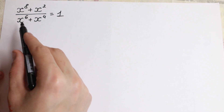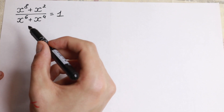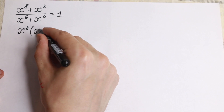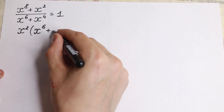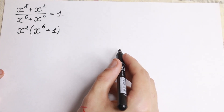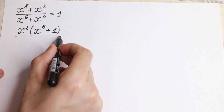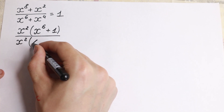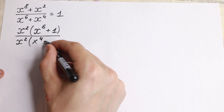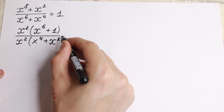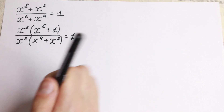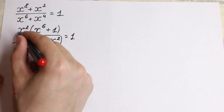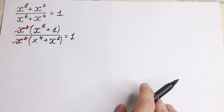Let's factor out x² from the numerator, because we can do this. If we factor x², we will have in our parentheses x⁶ plus one. So this is our numerator. And in our denominator, factoring x² we will have x⁴ plus x². So we factor x² and of course right now we can easily cancel this expression with x² in our numerator and denominator.